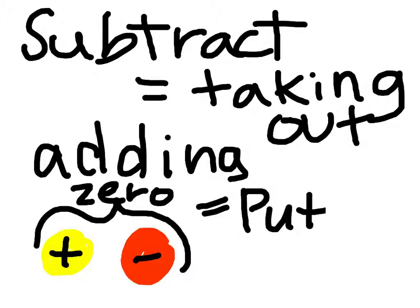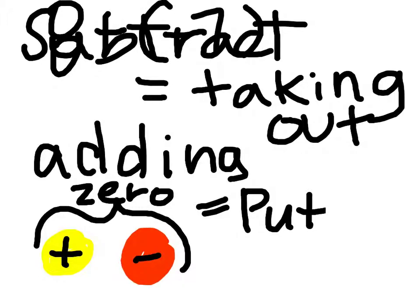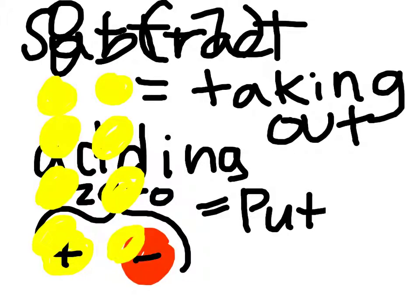The problem that we'll solve as an example is positive 8 minus negative 7. So we need 8 positive chips, there are 8 positive chips, and we have to subtract 7 negative chips and we don't have any.